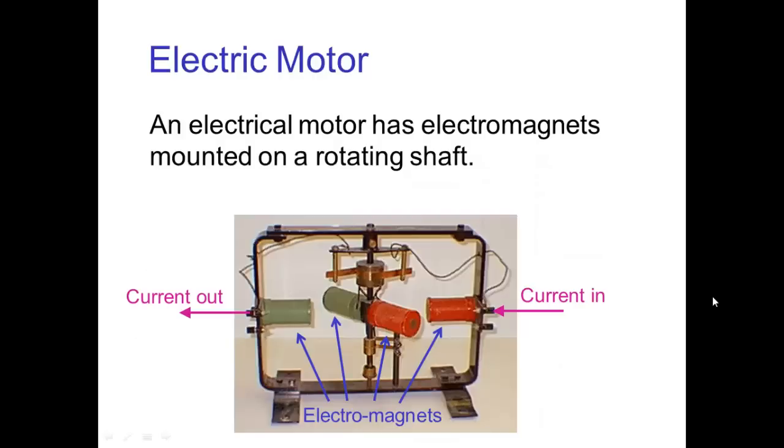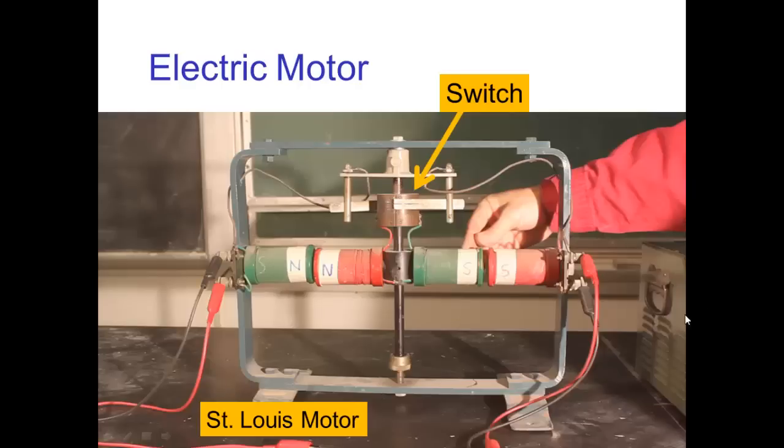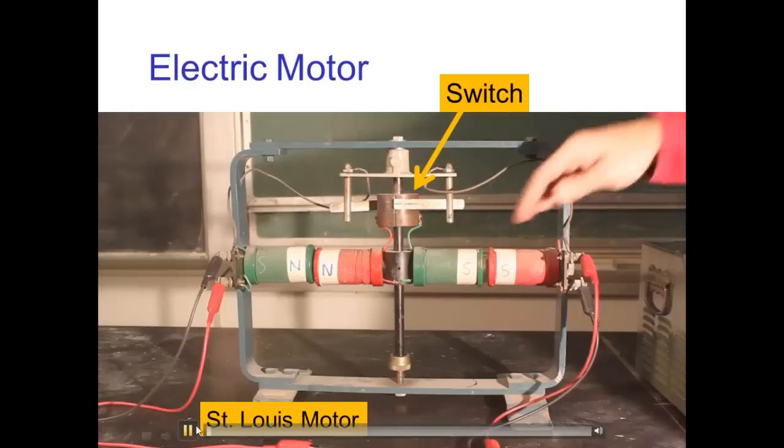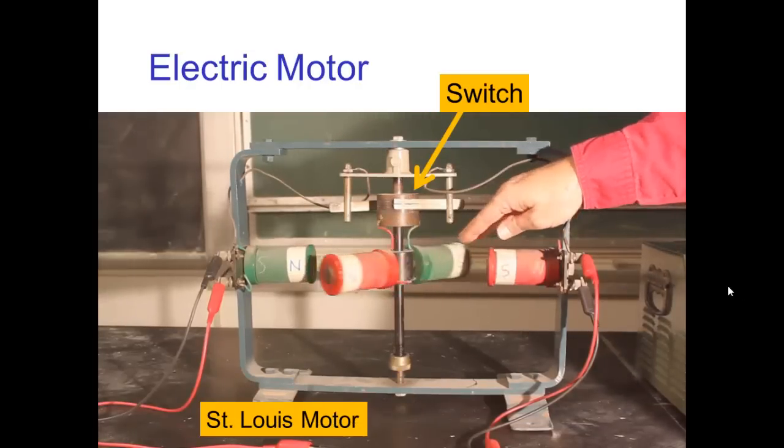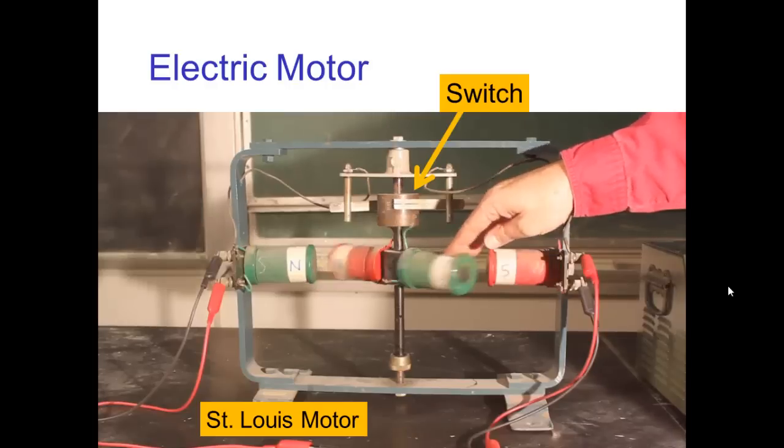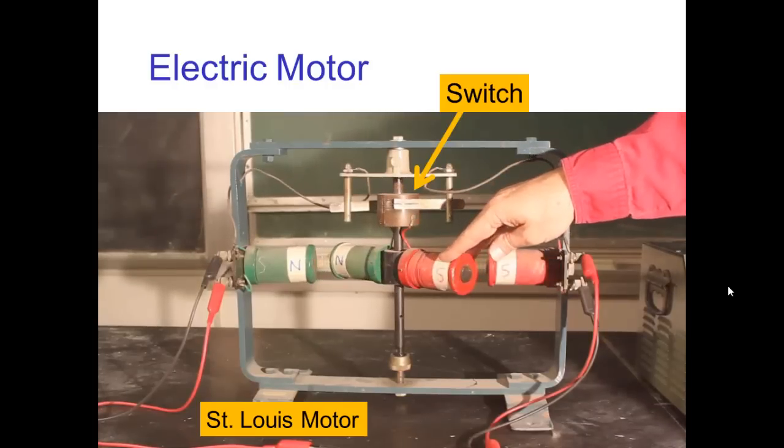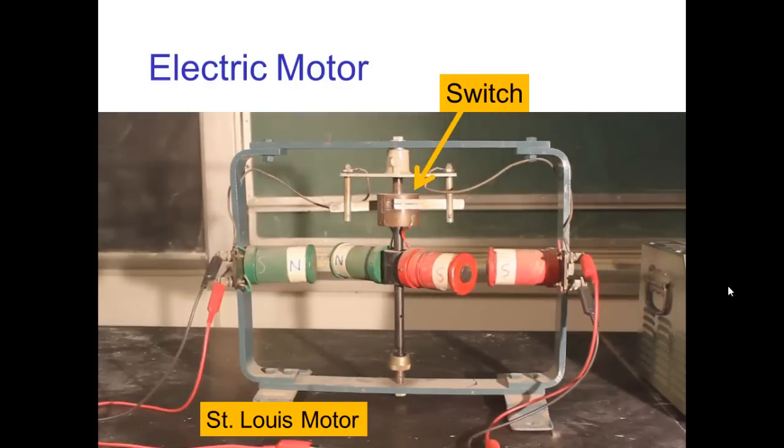Now, one last example of electromagnets is an electric motor. So, we can have the force of an electromagnet serve to create a rotation by passing a current through some electromagnets with the appropriate orientations.